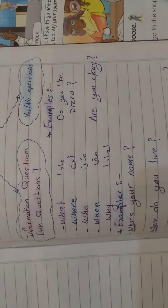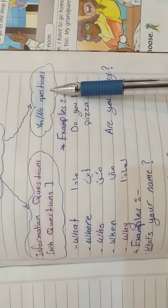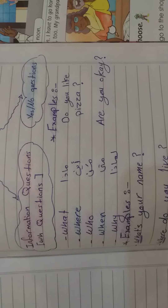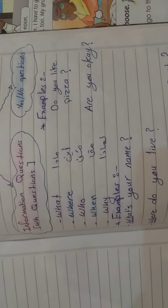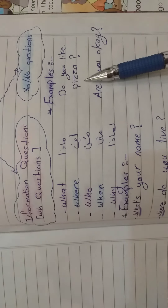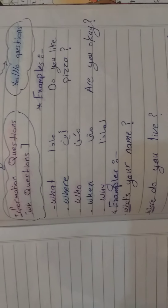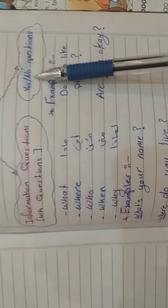Now move to the second type, which is yes or no questions. In this type, I don't need an information and I don't ask for an information — بهذا النوع من الأسئلة أنا ما بحتاج معلومة. You will only answer yes or no. For example, when I ask you: Do you like pizza? You will answer: Yes, I do — or: No, I don't. مشان هيك يا خامس سمينا هادي النوع yes or no questions.